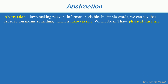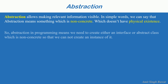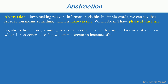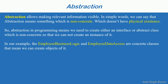Abstraction allows making only relevant information visible. In simple words, abstraction means something which is non-concrete — something that doesn't have physical existence. So abstraction in programming means creating either an interface or an abstract class, which is non-concrete, so that we cannot create an instance of it. In our example, EmployeeBusinessLogicLayer and EmployeeDataAccess are concrete classes — we can create objects of them. But an interface or abstract class has no physical existence; it is non-concrete.